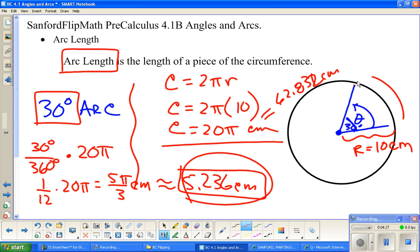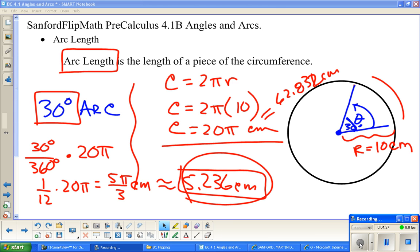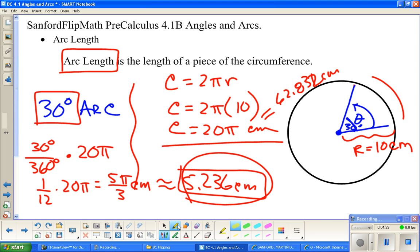Arc length is a piece of the circumference. It is a piece of how far around the entire circle you're going. The goal here was to find arc length. This is just a matter of how you would be asked to leave the answer. If it's exact, it's 5π/3. If it's rounded, it's 5.236.